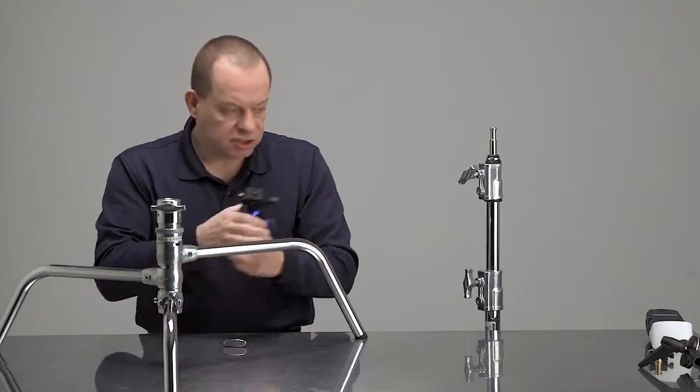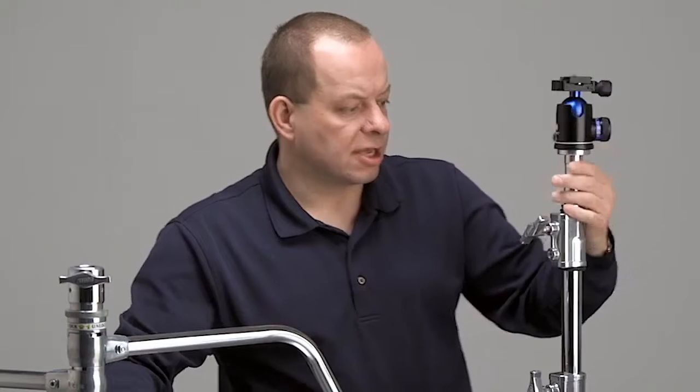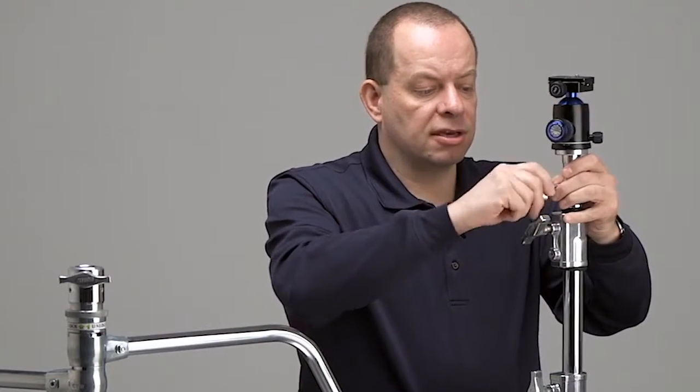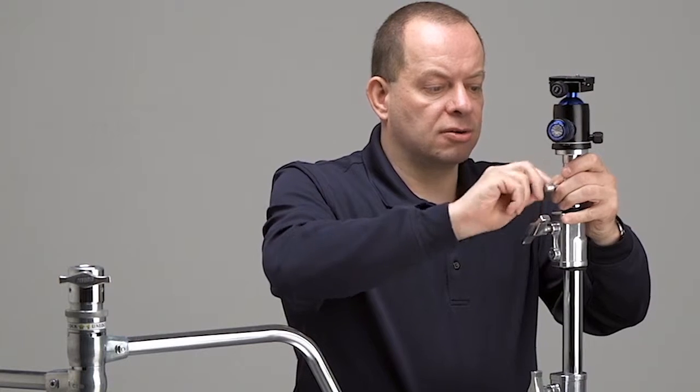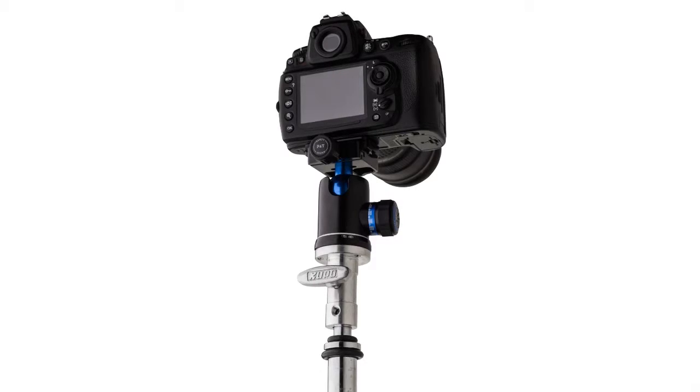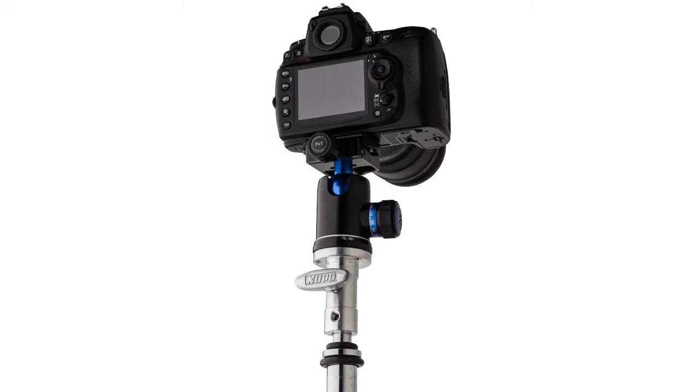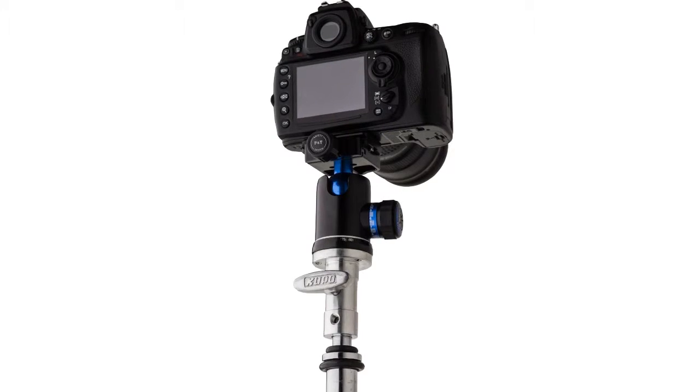And if we wish and we need to have it go up slightly higher than say what a traditional tripod will do, we can now take it and mount it onto a light stand. And now we have the capability of having a camera that can go up higher than a traditional tripod.